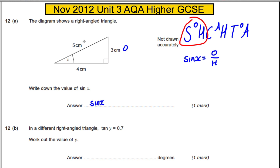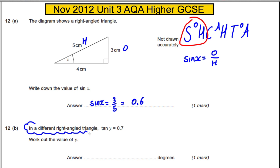So in our case, sine x is the opposite, which is 3, divided by the hypotenuse, which is 5. So it must be three-fifths, or if we decimalize that, it would be 0.6.